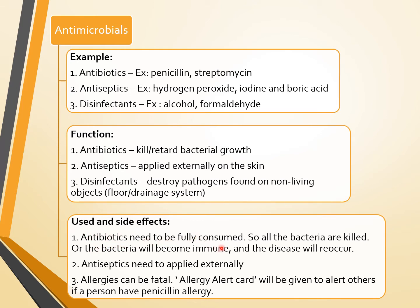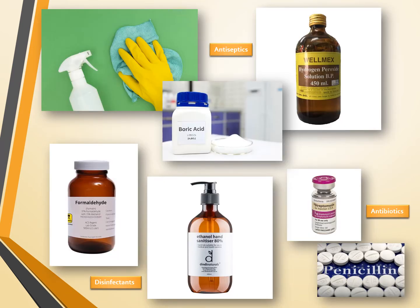Antibiotics need to be fully consumed so all bacteria are killed; otherwise, the bacteria will become immune and the disease will reoccur. Antiseptics need to be applied externally. Allergies can be fatal — an allergic alert card is given to alert others if a person has a penicillin allergy. Boric acid and hydrogen peroxide are antiseptics. Formaldehyde is a disinfectant used to preserve specimens. Ethanol hand sanitizer at 80% is also a disinfectant.